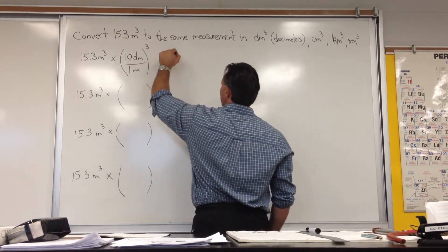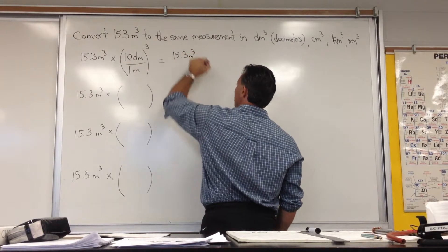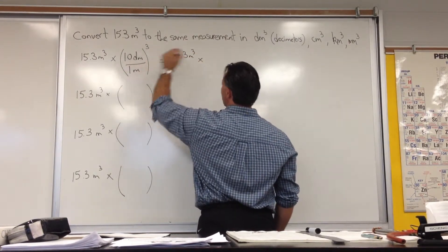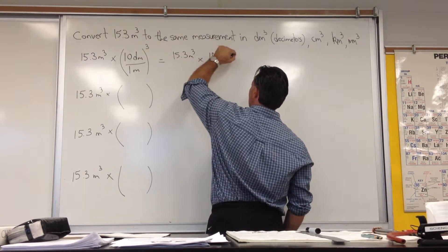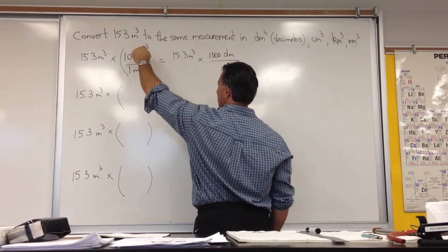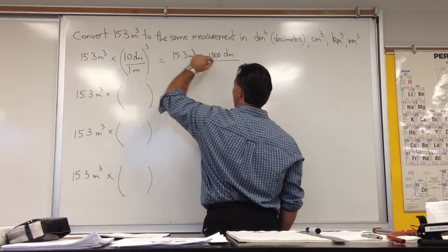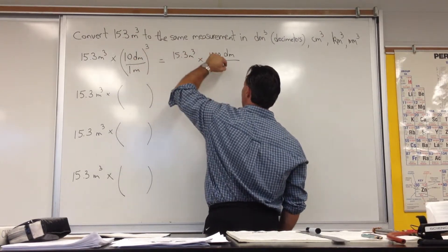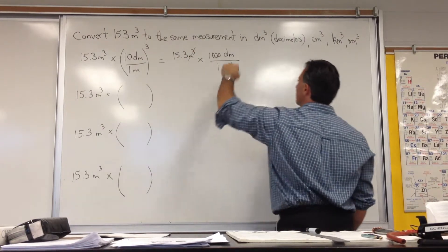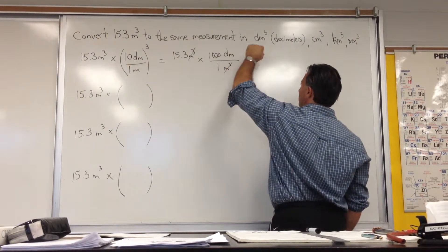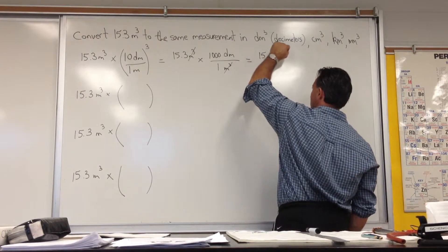So it gives you the following: 15.3 meters cubed is being multiplied by 10 cubed, which is 1,000 decimeters cubed. We distribute that cubed power into everything within the bracket. 1 is still 1, and meters cubed remains. Now it allows you to cancel the meters cubed, and the answer is going to be 15,300 decimeters cubed.